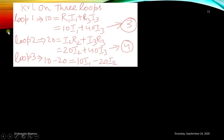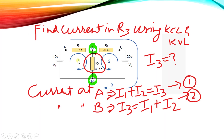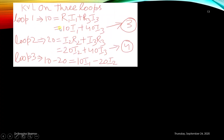Next, we apply KVL on the three loops. For loop 1: 10 equals R1·I1 plus R3·I3, which gives 10 equals 10·I1 plus 40·I3. For loop 2: 20 equals I2·R2 plus I3·R3. Substituting values of R2 and R3 gives the corresponding equation. For loop 3: 10 minus 20 equals 10·I1 minus 20·I2.